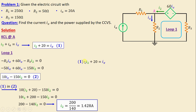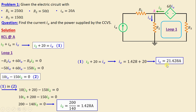From equation one, we have ix equal to i2 plus 20. Replacing i2 with its numerical value, we obtain ix is equal to 21.428 amps.